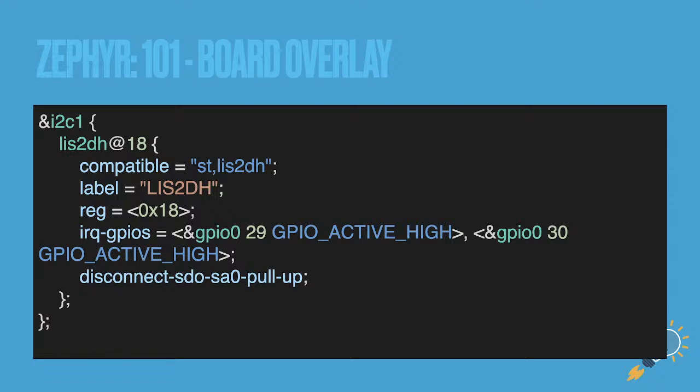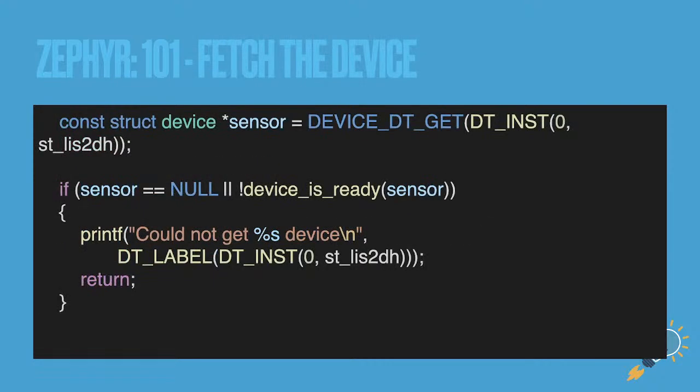Here is the board overlay. I'm using the NRF9160 Feather antenna-less, and you'll see in a second that I'm setting it and it's triggering on those motion events. To fetch the device, we use the device DT get macro to get the first instance of st_lis2dh. Remember that st_lis2dh corresponds to the name of the device binding — device bindings are generally organized as manufacturer, then the device name, so in this case st_lis2dh.